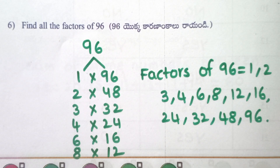Find all factors of 96: 1×96, 2×48, 3×32, 4×24, 6×16, 8×12. Factors of 96 are 1, 2, 3, 4, 6, 8, 12, 16, 24, 32, 48, 96.